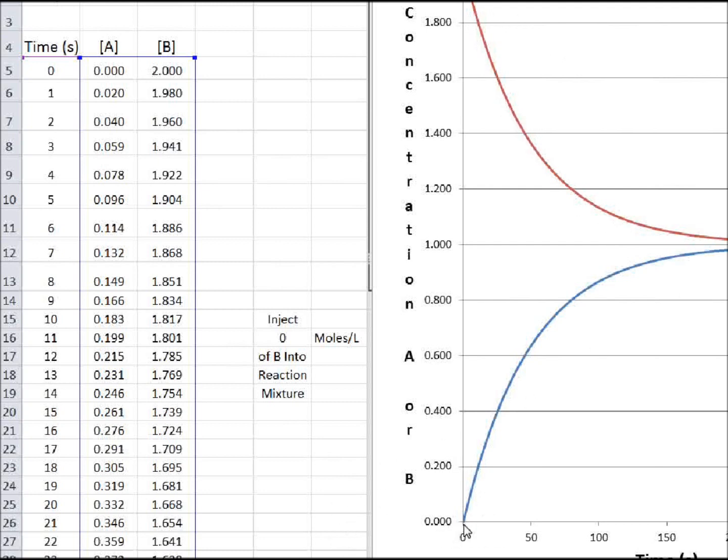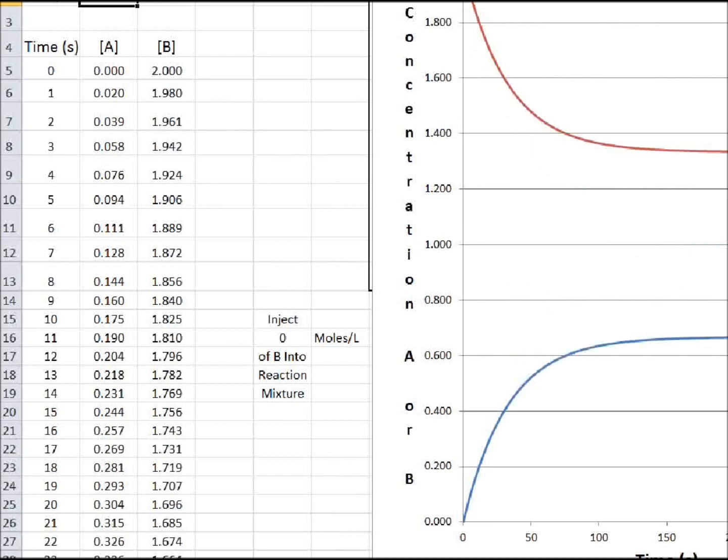Now let's see what happens if we make the rate constant for A going to B twice as large as that of B going to A. So I'm going to change this to 0.02. So there's a two-to-one ratio in the rate constants. Well, now you see that you don't really get equilibrium until the concentration of B is twice the concentration of A. The equilibrium constant is two.